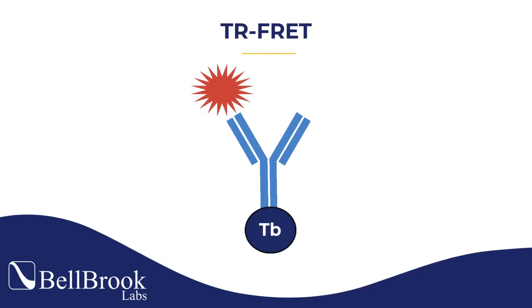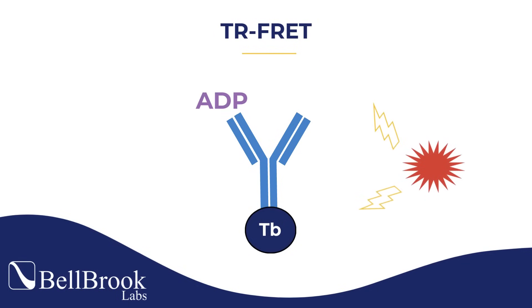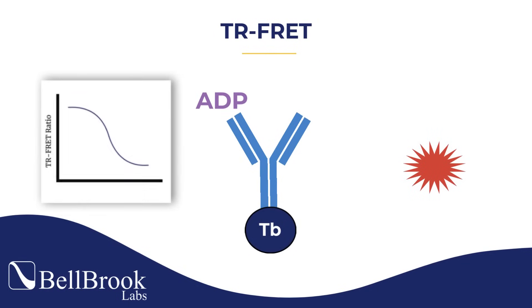TR-FRET uses an antibody modified with terbium. When the tracer is in close proximity to the antibody-terbium complex, it allows FRET to occur. ADP competes off the tracer and thus lowers the signal.